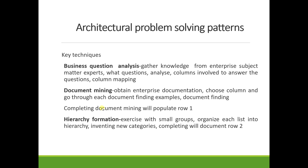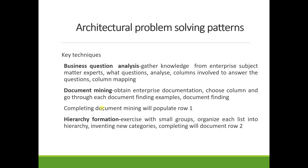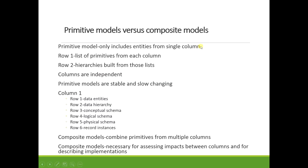The second key technique is document mining. Here we obtain as much enterprise documentation as possible, choose a column, go through each document finding examples, and keep a list of what we found — the enterprise text defining it, the document, and the page number for later traceability. Completing document mining for all interrogatives will populate row one, which is for identification.